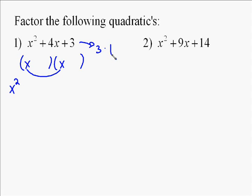Then we look at the last term, which is 3, and we know that we need to multiply two things together to get 3. One of the things you look at is the signs of the x term and the number. If they're both positive, then you know in your factorization they're both going to be positive. So we did x times x to get x squared, and we did 3 times 1 to get 3.